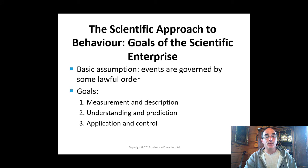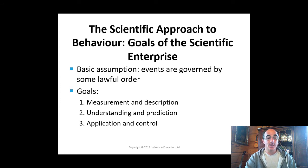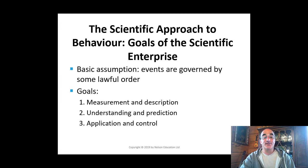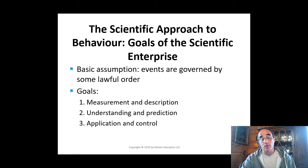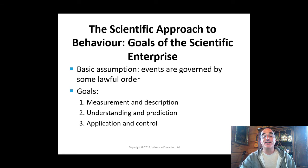Psychologists assume that behavior is governed by discernible laws or principles that just need to be uncovered. The goals of the scientific enterprise in psychology are to measure and describe a phenomenon, for example sociability, to understand and predict. Psychologists form a hypothesis about how variables interact, and a hypothesis is a tentative statement about a relationship between two or more variables.